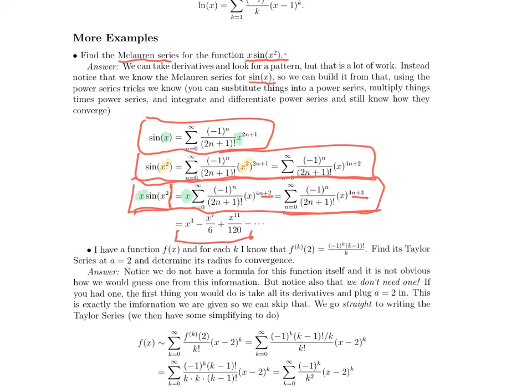First few terms look like x³. When n equals 0, we get (-1)⁰ over 1 factorial times x to the 4 times 0 plus 3, which is x³. When n equals 2, we get negative 1 over 3 factorial, which is 6, times x to the 4 plus 3, which is 7, and so on. Going forward, you want to use these standard series that we know to find series for what you want. So very rarely will you ever need to build a series from scratch.